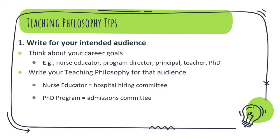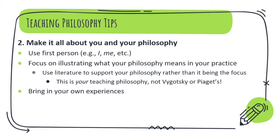So if you want to be a nurse educator, write your philosophy for a hospital hiring committee. If you want to do a PhD in education, write for the admissions committee in the Faculty of Education. Another tip is to make this about you and your philosophy. Your philosophy should be reflective and include your own voice, so please use the first person — that is, 'I' and 'me' rather than 'one' or 'it is stated that.' While we do ask that you bring in some literature to support your statements, such as key theories, really focus on illustrating what this means to you and what this looks like in your practice. Make sure this is your philosophy in your words, not Piaget's or Vygotsky's words, even though you may draw on their ideas. Don't be afraid to bring in your own experiences — that illustrates things well and this is meant to be a highly reflective document.